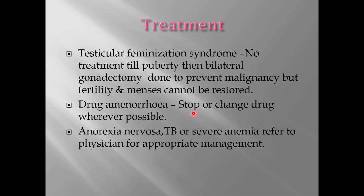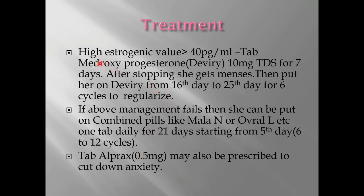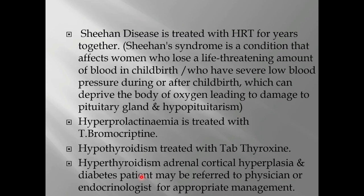For drug-induced amenorrhea, if possible, the drug should be stopped or changed. For anorexia nervosa, TB, and severe anemia, the patient must be referred to a physician for appropriate management. If the woman is found to have high estrogenic value (above 4 pg/mL), medroxyprogesterone acetate (available as Depo-Provera/Deviry) 10 mg TDS for 7 days is given, then she is put on Deviry from day 16 to day 25 for 6 cycles to regularize menstruation. If this fails, combined pills like Mala-N or Ovral-L, one tab daily for 21 days starting from day 5, can be given for 6 to 12 cycles. Tab Alprax 0.5 mg may be given to reduce anxiety, which is also a major reason for amenorrhea.